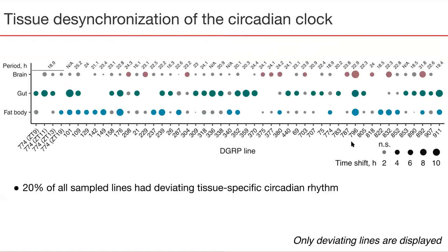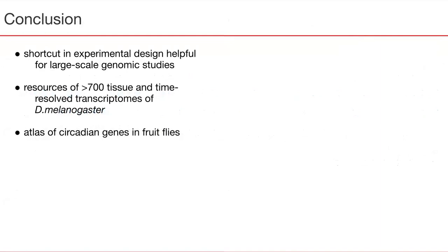To sum up, I presented a shortcut to experimental design of large-scale population genetic studies, which will be particularly useful to study time-dependent biological processes such as aging and development. I also outlined a resource of more than 700 tissue- and time-resolved transcriptomes of fruit flies, which could further be used for studies such as elucidating mechanisms of tissue-specific gene expression. Finally, we believe that our atlas of circadian gene expression will also be useful for the circadian community. I would like to thank my colleagues who did an amazing job, and without whom this work would not have been possible. Thank you for your attention.